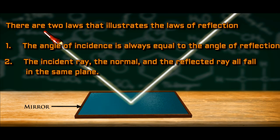There are two laws that illustrate the laws of reflection. Number one: The angle of incidence is always equal to the angle of reflection. Number two: The incident ray, the normal, and the reflected ray all fall in the same plane.